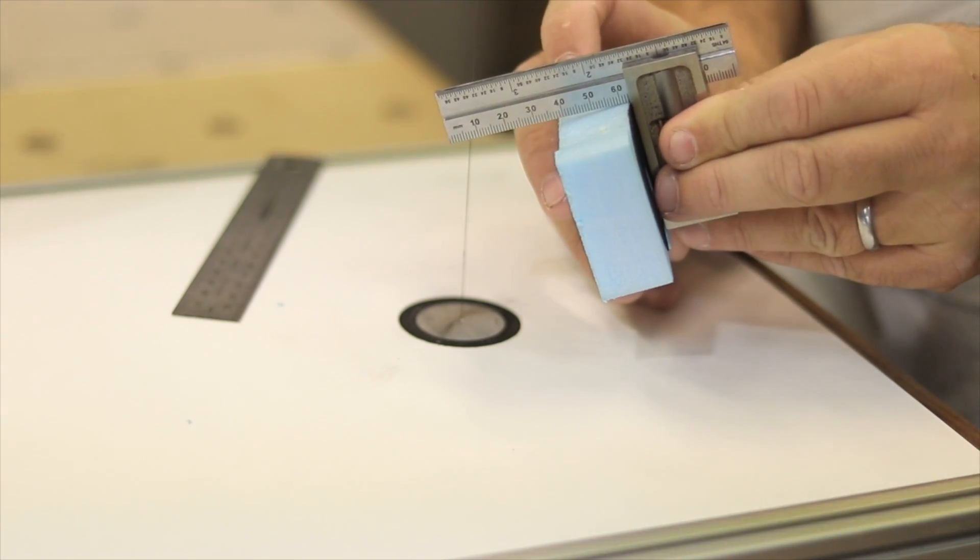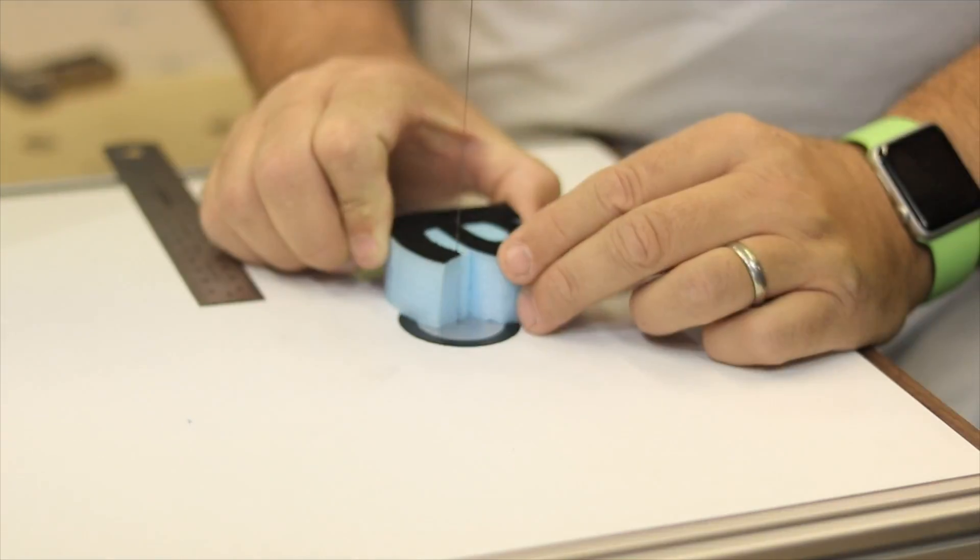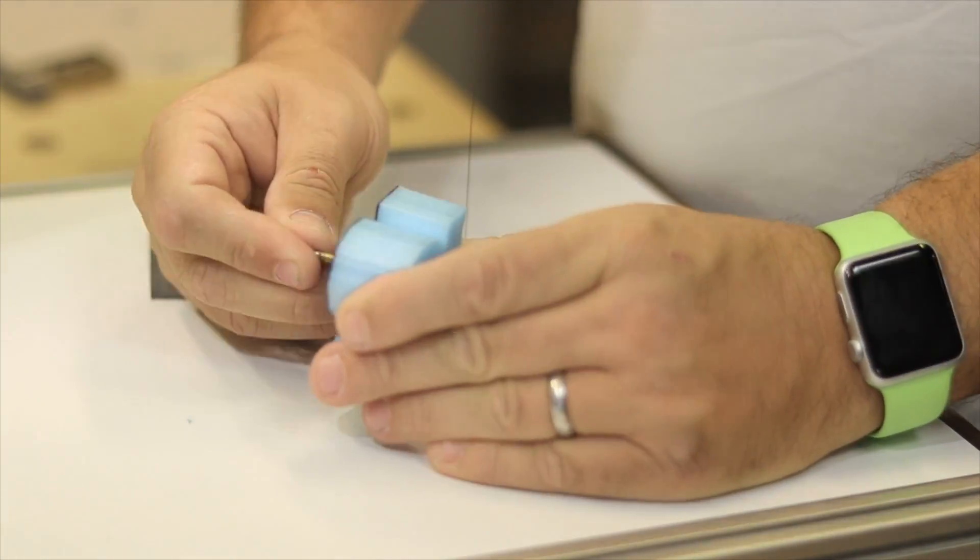So you get a deflection when you're not using the jig.